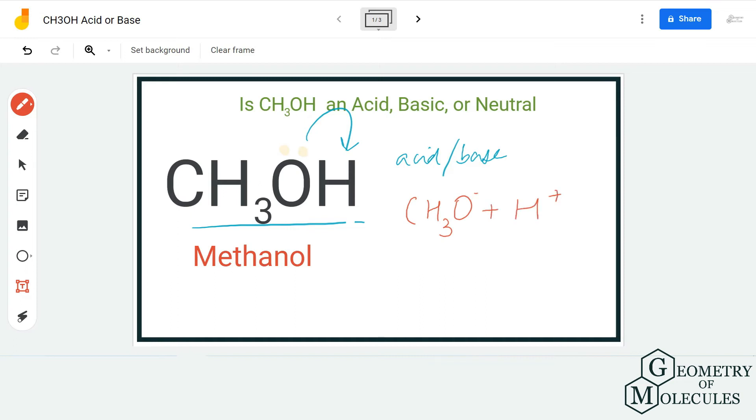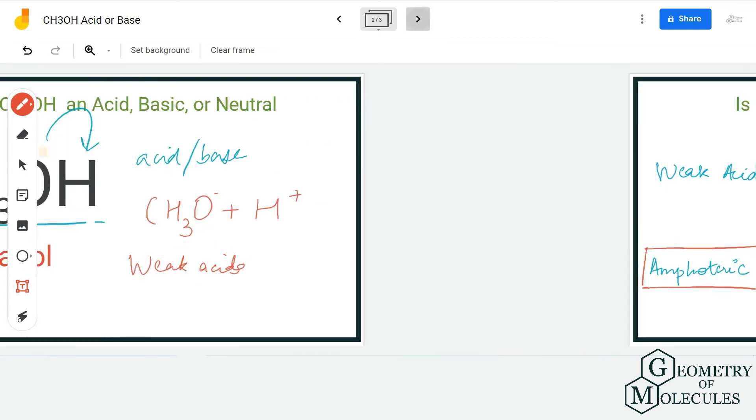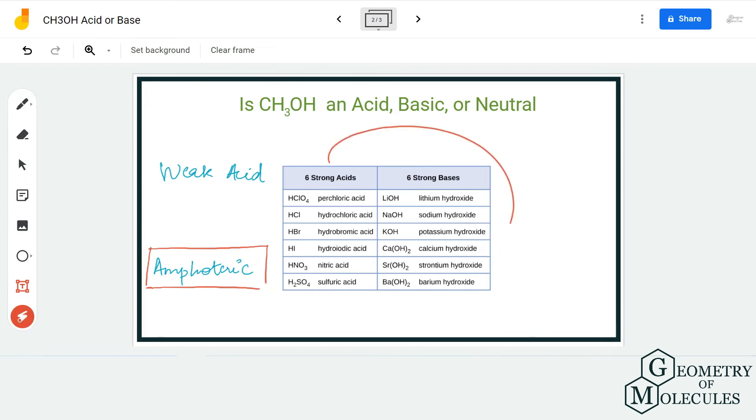If you look at this table of strong acids and strong bases, you will not find CH3OH because it exhibits the properties of a weak acid. So it has properties of both Lewis base and a weak acid.